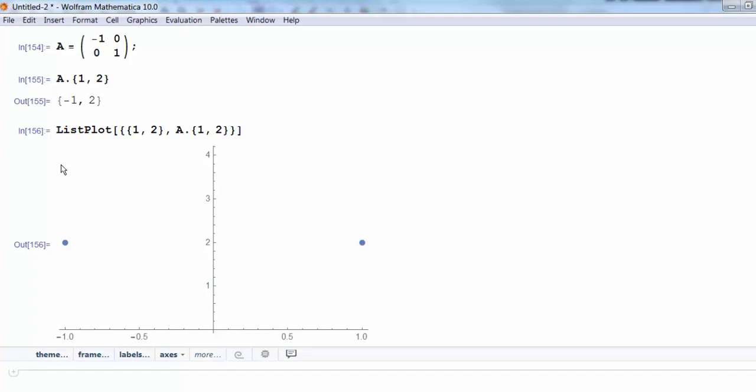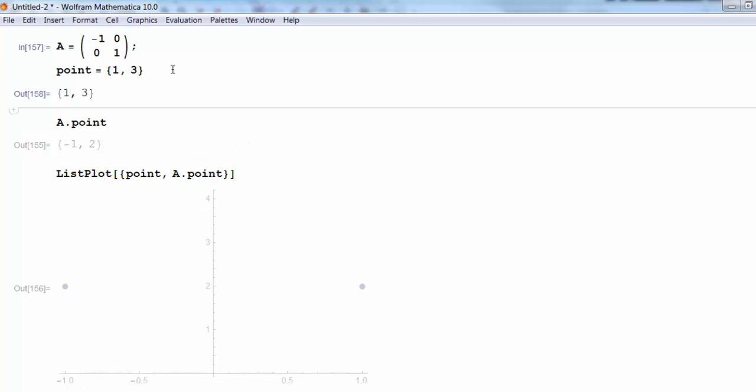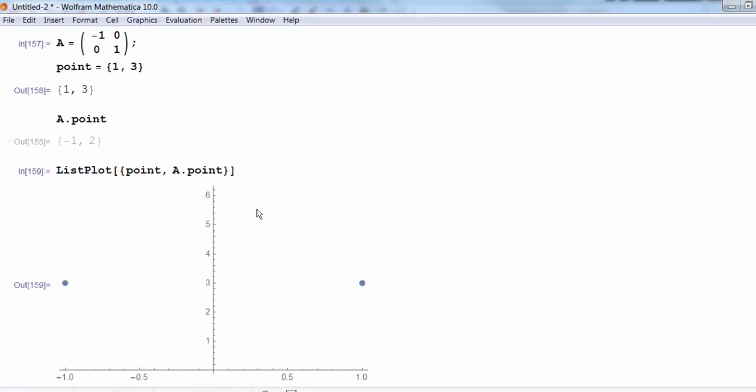And if I want to play around and try it with another point, one little shortcut I could do is define something called point to be the point I want to change. Here, let's try a new point. Let's try 1, 3, for instance. If I make that change, now I can just replace my point in the previous positions with the stored command point. This way, if I want to change my point again in the future, I won't have to retype it every time. So I can evaluate that definition cell, and I can run my plot. And sure enough, once again, it looks like a reflection about that axis.